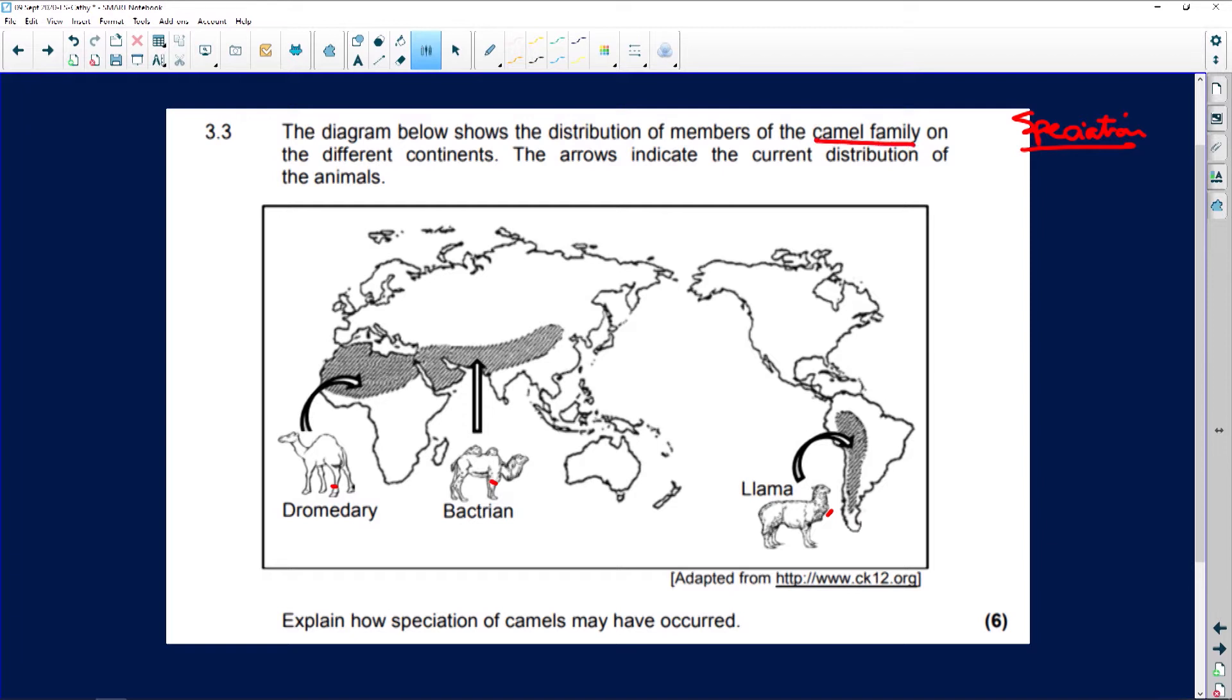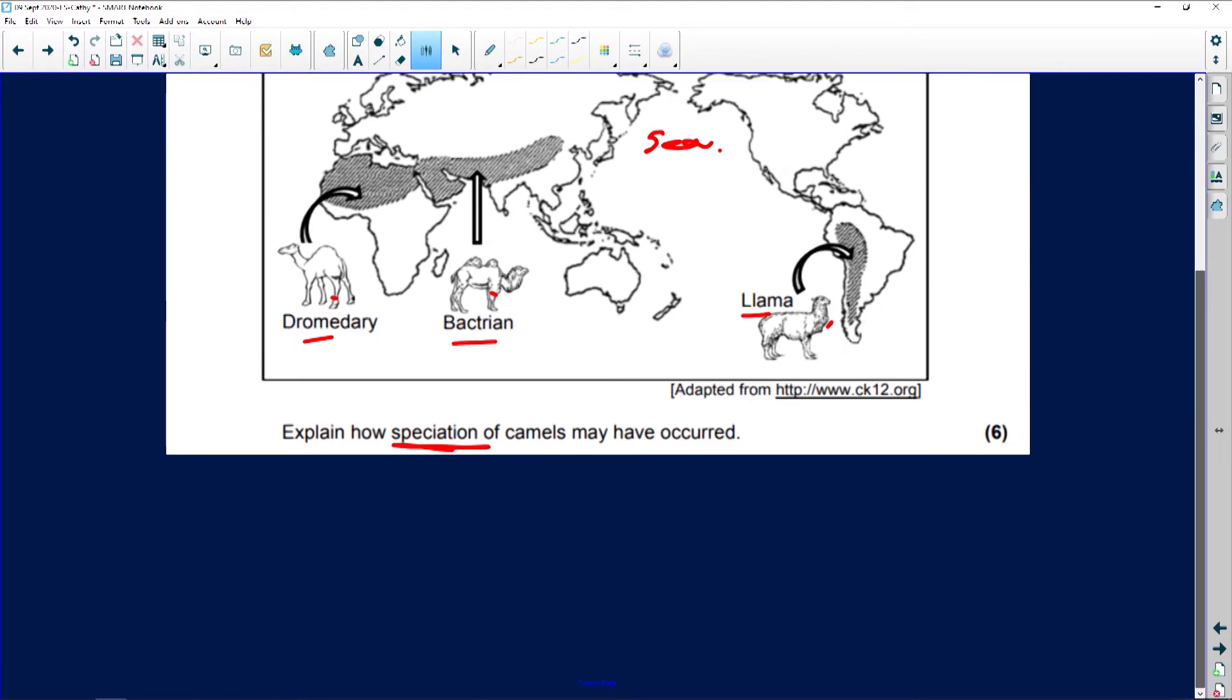We're looking at the distribution of a camel family in this case on different continents. So what separates them if they're on different continents? You're going to have land and sea. The arrows indicate the current distribution of the animals. We've got the dromedary, the bactrian, and the llama. Doesn't matter, they could have been tortoises. So it says explain how speciation of the camels may have occurred. What I'm going to give you now, it doesn't matter what animal it is, this is the process you are going to follow.